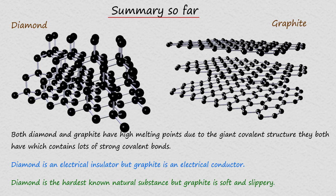Finally, diamond is the hardest natural substance known because it is a giant structure where each carbon atom makes four strong covalent bonds. However, graphite is often slippery due to the weak intermolecular bonding between the flat layers of hexagon carbon atoms.